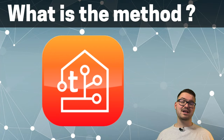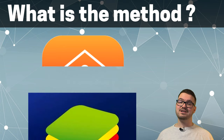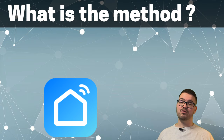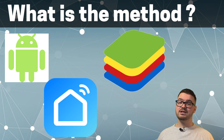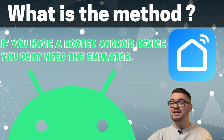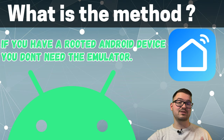The method we're going to use today is extracting the local keys from the Smart Life app on a rooted Android device. If you're an Android user with a rooted device and the Smart Life app, be sure to use the chapters below and skip over the whole emulator setup, because you can jump straight into the actual key extraction.